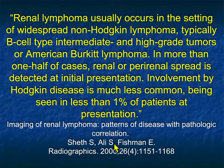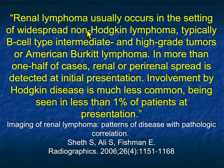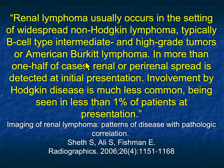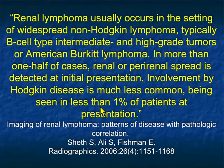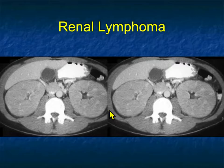From our article published about 17 years ago: renal lymphoma usually occurs in the setting of widespread non-Hodgkin's lymphoma, typically B cell type. In more than half of cases, renal and perirenal spread is detected at initial presentation. Involvement by Hodgkin's disease is much less common, seen in less than one percent of patients at presentation.